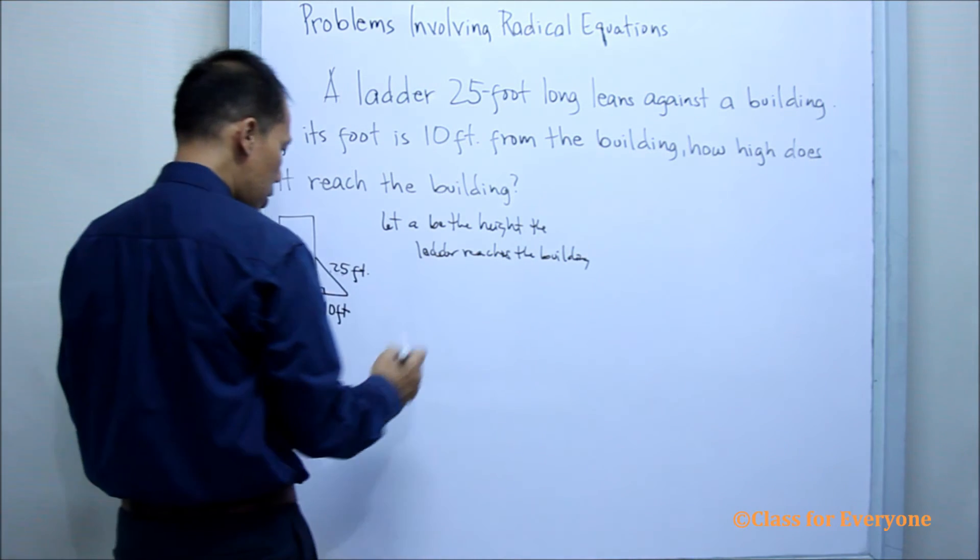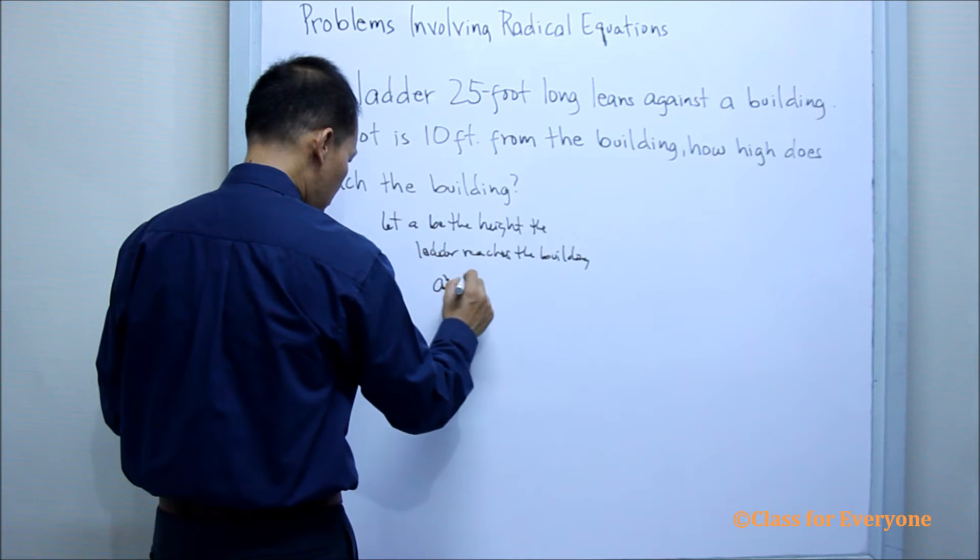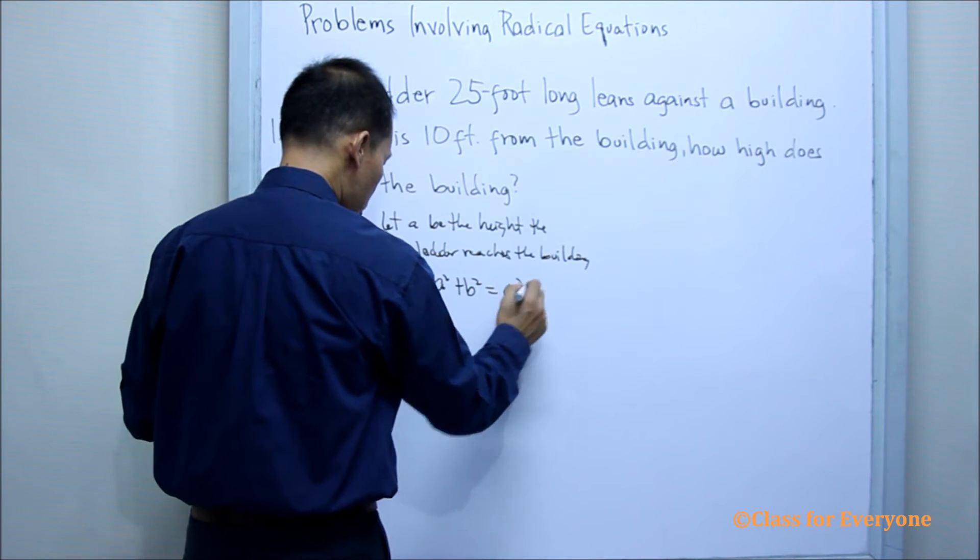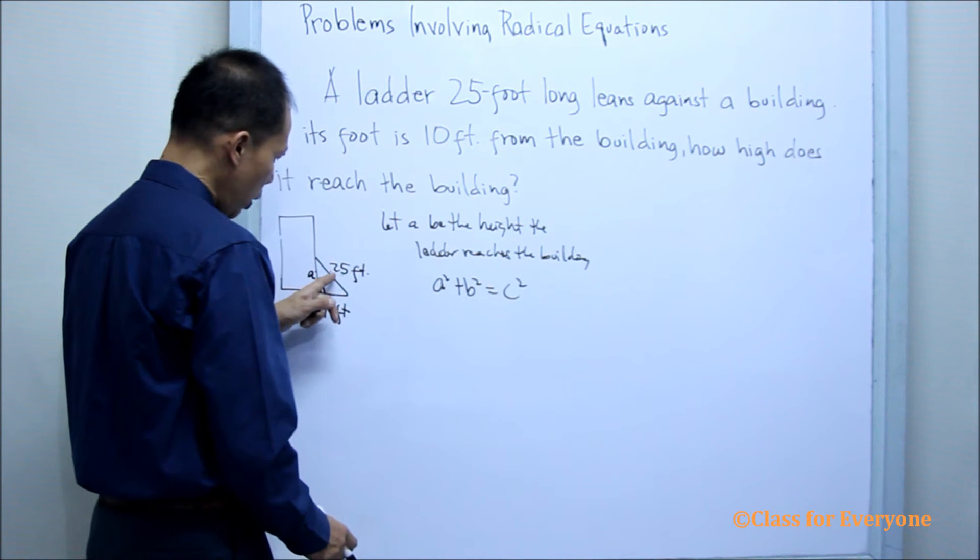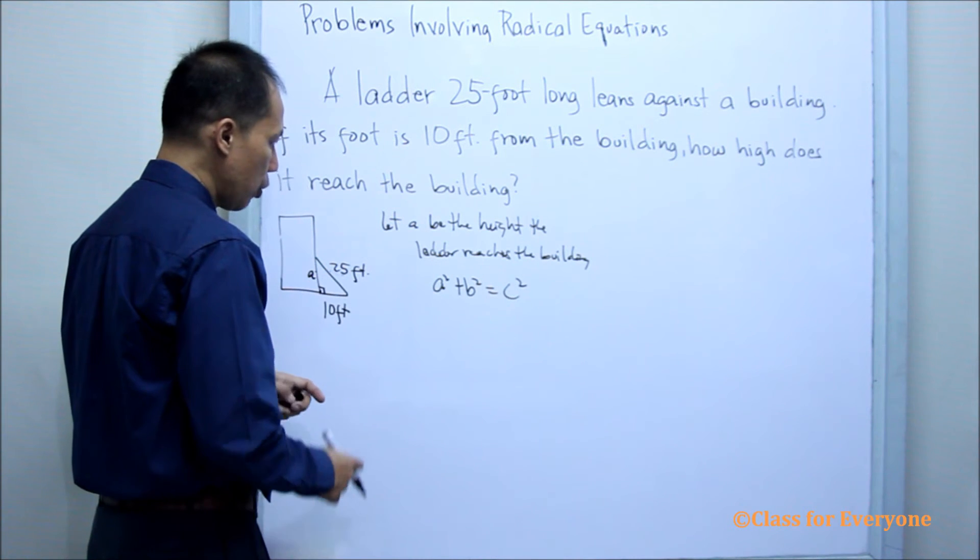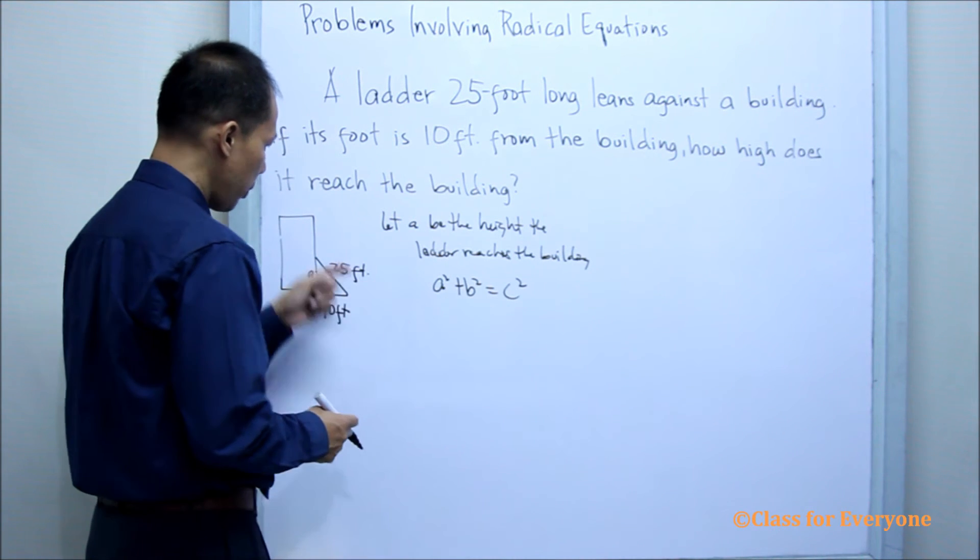In Pythagorean theorem, it states that A squared plus B squared is equal to C squared, where C is always the hypotenuse. We can now substitute for the values of A, B, and C.